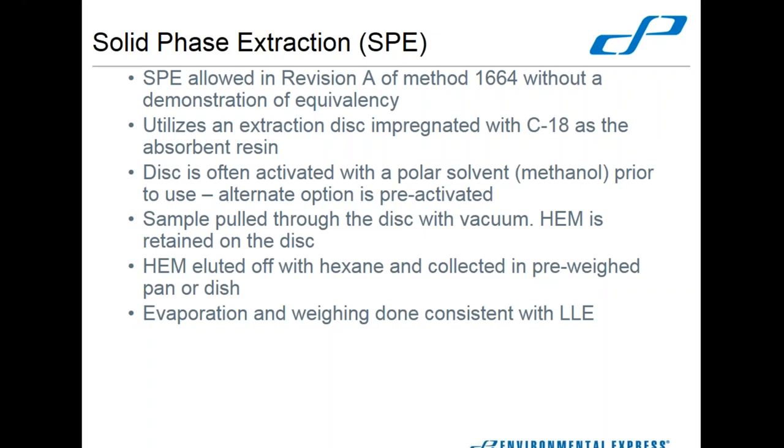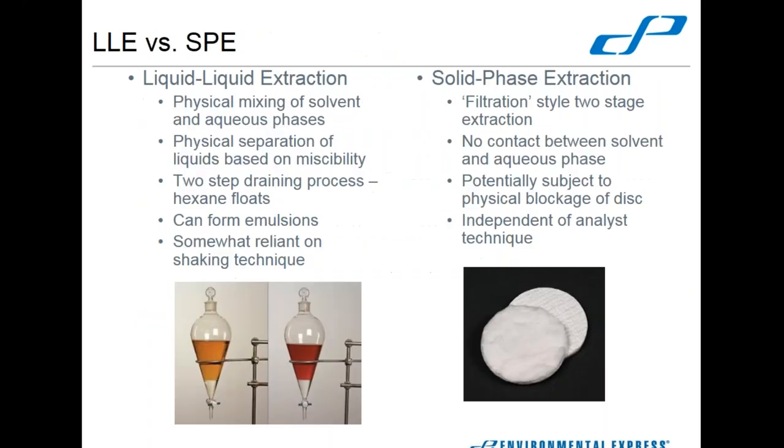The general process is you are just pulling your sample through the disk with vacuum. HEM is retained on the disk, attracted to that C18 resin. Then you elute with hexane, collect that hexane in a pre-weighed pan or dish, and then you do your evaporation and weighing the same as you would normally with liquid-liquid extraction.